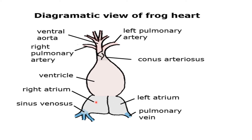The oxygenated and deoxygenated blood mixes in this single-chambered ventricle. From the ventricle, the blood is carried via the aorta to different parts of the body like the head and brain, and via the pulmonary artery again towards the lungs for oxygenation. The conus arteriosus receives the blood from the ventricle.